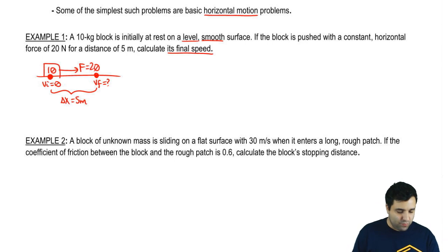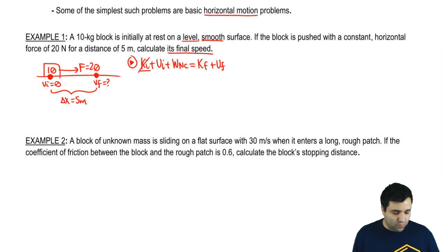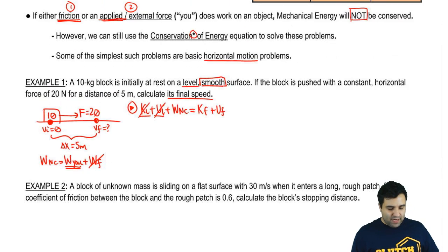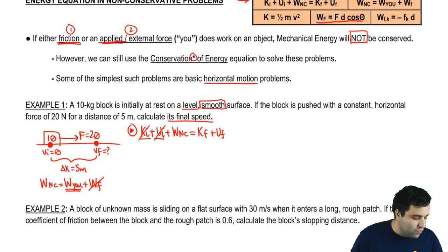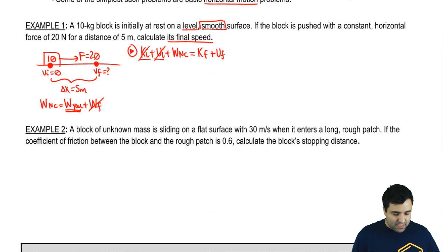We can use the conservation of energy equation to do this. Kinetic initial plus potential initial plus work non-conservative equals kinetic final plus potential final. Is there a kinetic energy in the beginning? There isn't because the object is not moving. Is there a potential energy in the beginning? There isn't because the object is on the floor. Is there work done by non-conservative forces? There is no friction because we're talking about a smooth surface, but you are pushing on the object over a distance. So there is work done by U. When you want to calculate the work done by an external force, you can use the general work equation, which is F d cosine of theta.